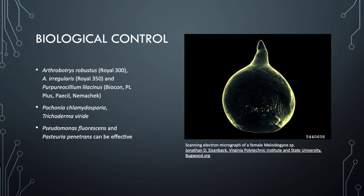Several species of fungi and bacteria are known to control the nematode. This includes Arthrobotrys robustus, which has been developed into purchasable products, as well as Arthrobotrys irregularis and Purpureocillium lilacinum. Other fungi that have some effect on controlling these nematodes have also been studied. Among bacteria, Pseudomonas fluorescens and Pasteuria penetrans are used as potentially effective biological controls of root-knot nematodes.